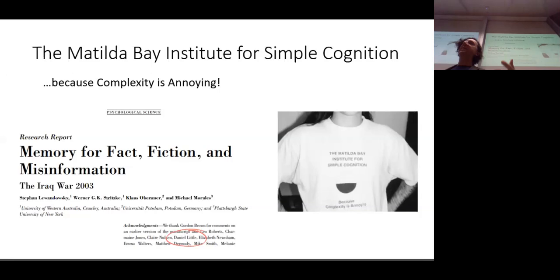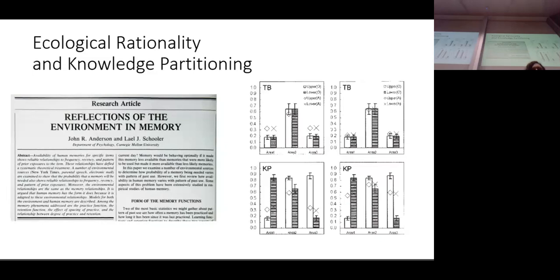It was the Matilda Bay Institute for Simple Cognition, because complexity is annoying. And I thought, this is great, I love this. I was pretty sold that research was what I wanted to do. I had taken three years out between high school and getting back into university. So I really was enjoying getting my hands dirty. The second thing that happened was that in the cog psych class, Steve presented two topics which I found really intriguing. One was on ecological rationality, the idea that cognition reflects elements of the environment. And the second was knowledge partitioning, which was the idea that people develop contradictory knowledge, where people can learn contradictory rules in different contexts and then access them without any cross-talk between them, without any interference.